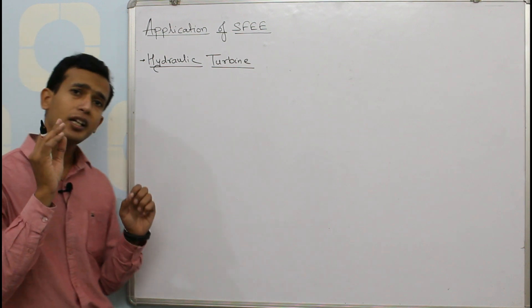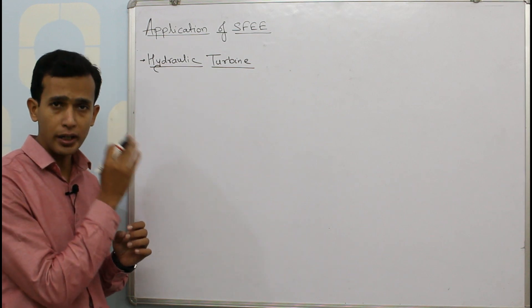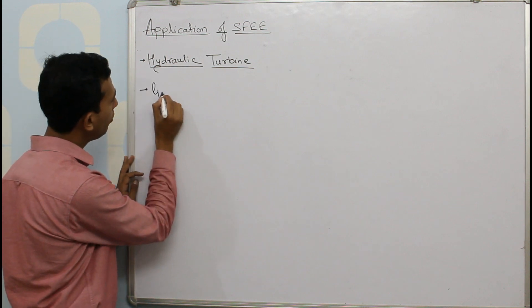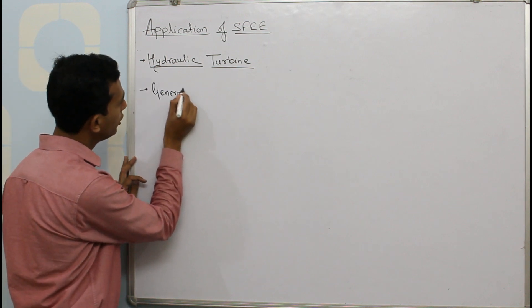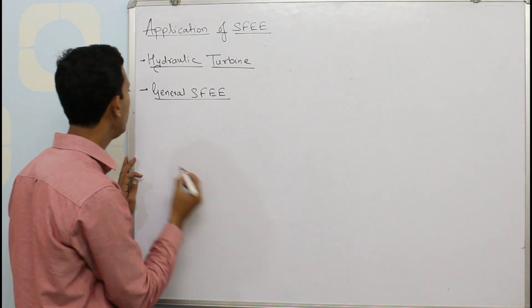Now what are the various factors which are going to be considered for this hydraulic turbine? So we have the general form, the general steady flow energy equation which we have already discussed in the previous video.